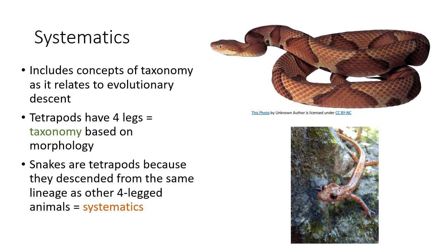Systematics is a little different from taxonomy because it includes the relationship to evolutionary descent. A taxonomic classification of tetrapods looks at morphological characters — four legs — and groups them accordingly. But what do we do with snakes? Snakes don't have four legs, but we know evolutionarily they fit within that same group; they just evolved a body form without legs. Systematics takes that into account, placing snakes within the tetrapod group — as an evolutionary group, not just a morphological one.